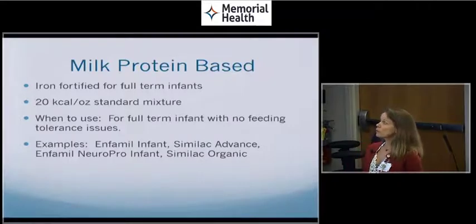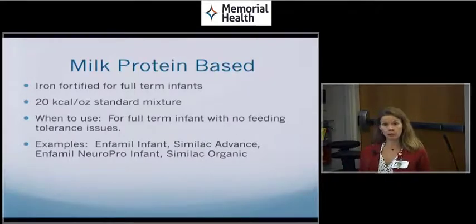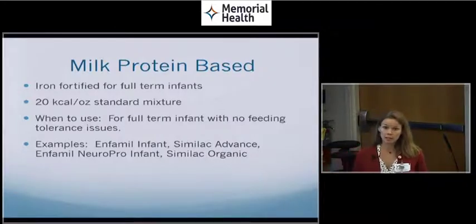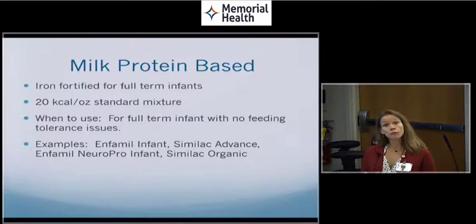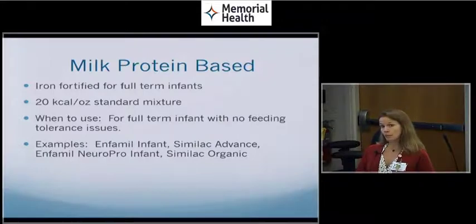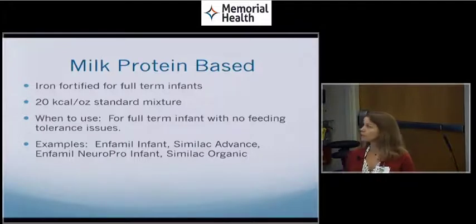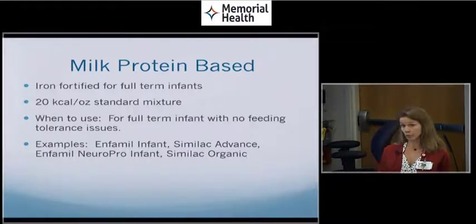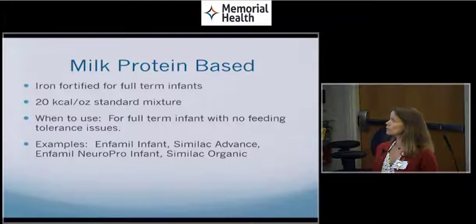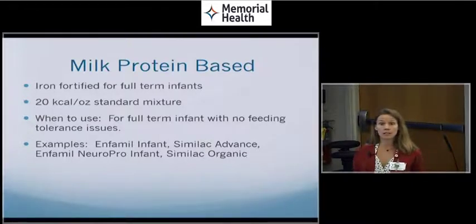The first formula I want to talk about is the standard formula. It's a milk protein based formula. Those are going to be iron fortified and they're going to be for full-term infants. These are not for premature infants. The standard mixing when you mix it according to the package directions are going to be 20 calories per ounce. When to use these? We're going to use these for the full-term infant that has no feeding intolerance issues.